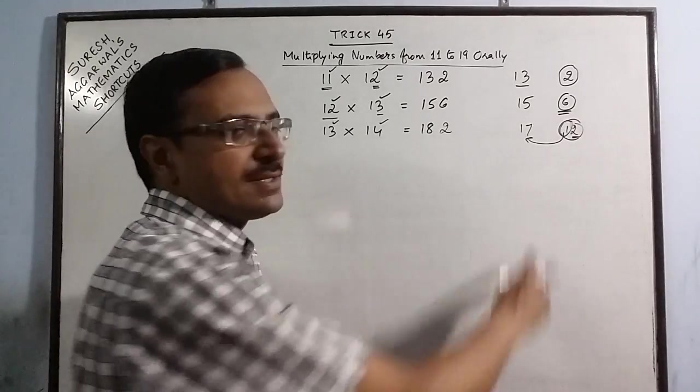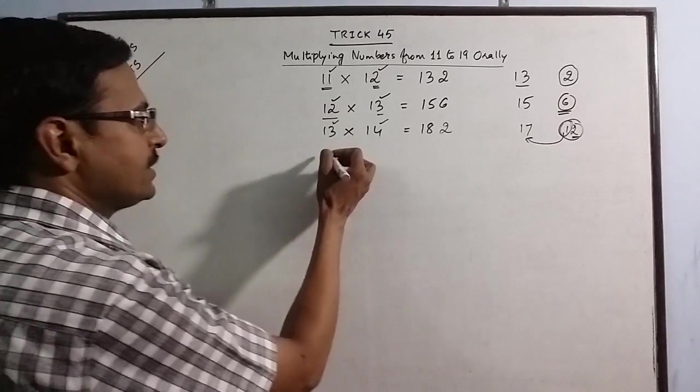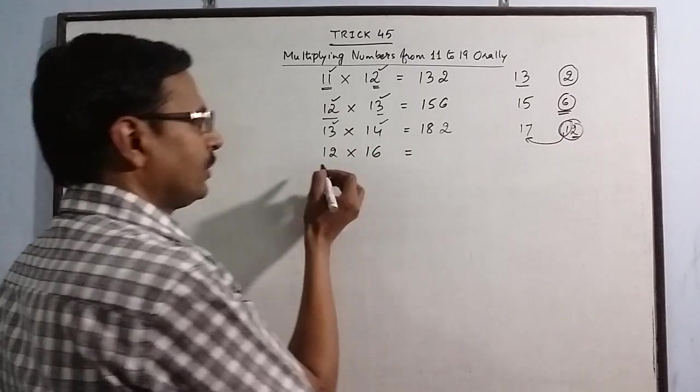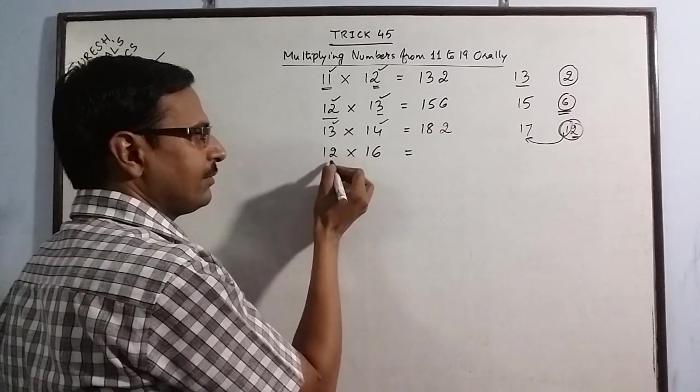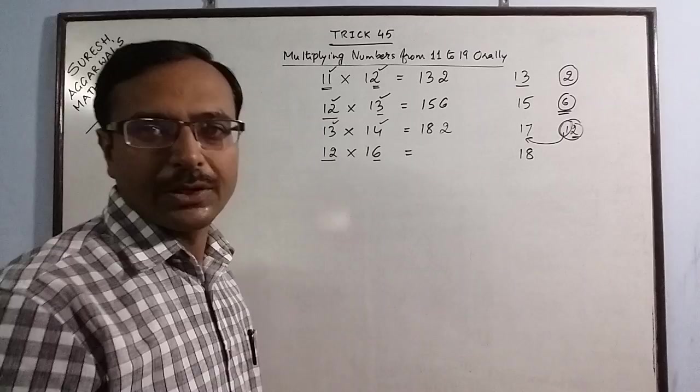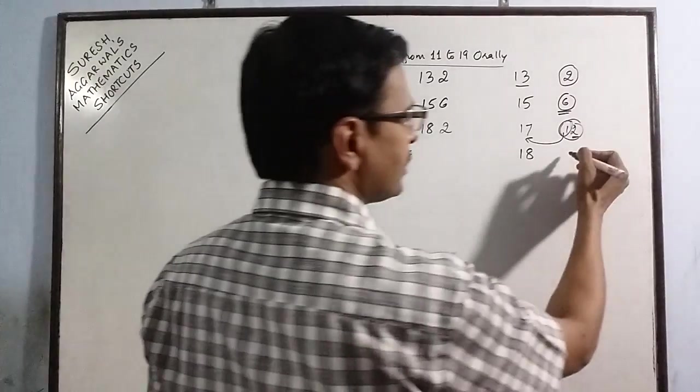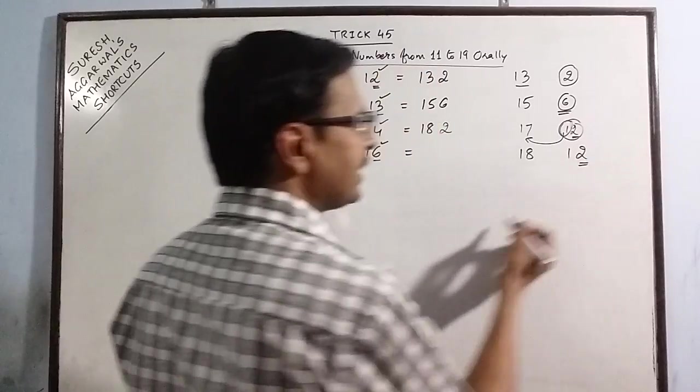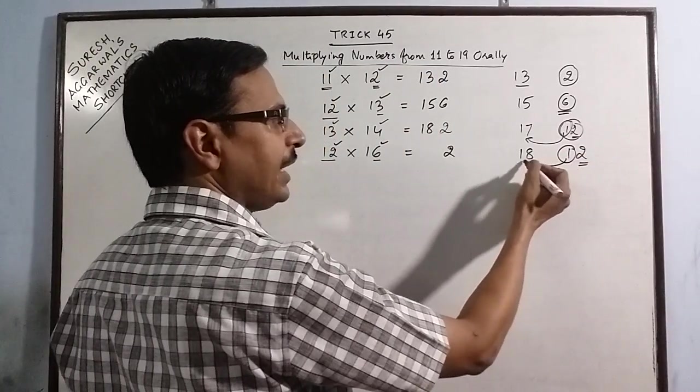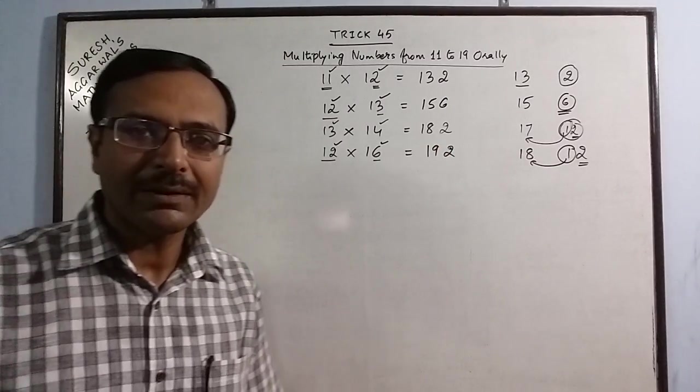This one step is increased here which I will illustrate in one more example now. We have 12 into 16. First step remains the same, 12 plus 6 is 18. Now take the units places 2 and 6. 2 into 6 is 12. Unit place comes as it is and this number gets added here. 18 plus 1 is 19. So 192 is the product. It is as simple as that.